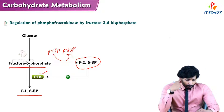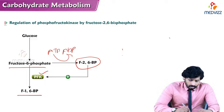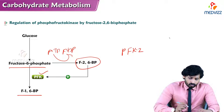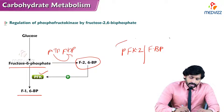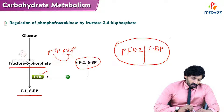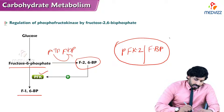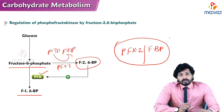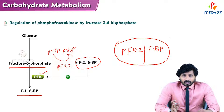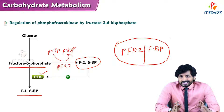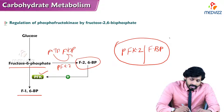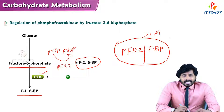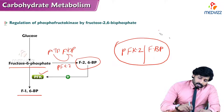The enzyme responsible for producing fructose-2,6-bisphosphate is phosphofructokinase 2, also known as PFK2/fructose bisphosphatase. It is a bifunctional enzyme — a dimer. PFK2 is activated in its dephosphorylated state and inactivated in its phosphorylated state.